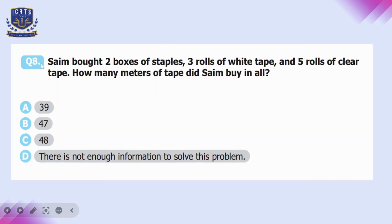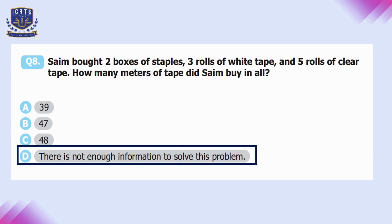Question number eight: Sam bought two boxes of staples, three rolls of white tape, and five rolls of clear tape. The question asks how many meters of tape he bought in all. Since no length information is provided, option D — there is not enough information to solve this problem — is correct.